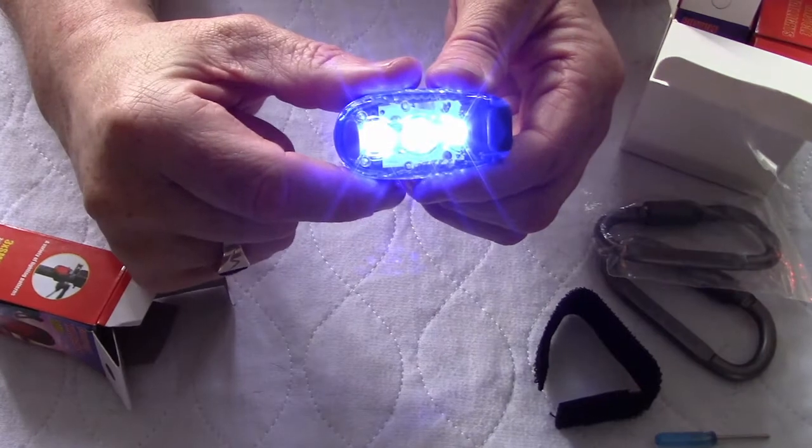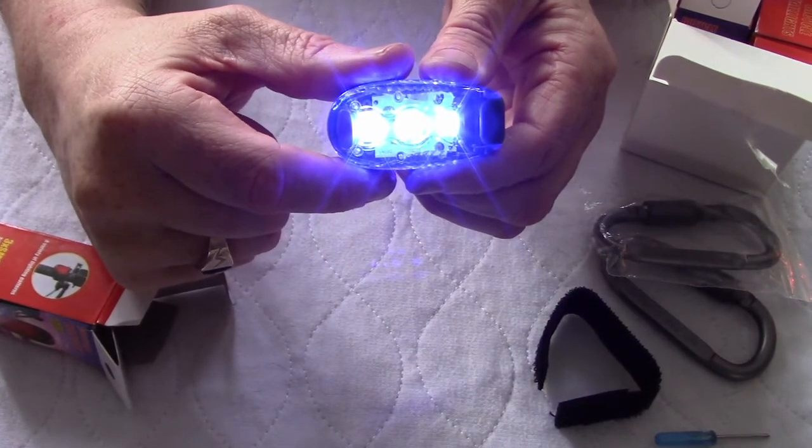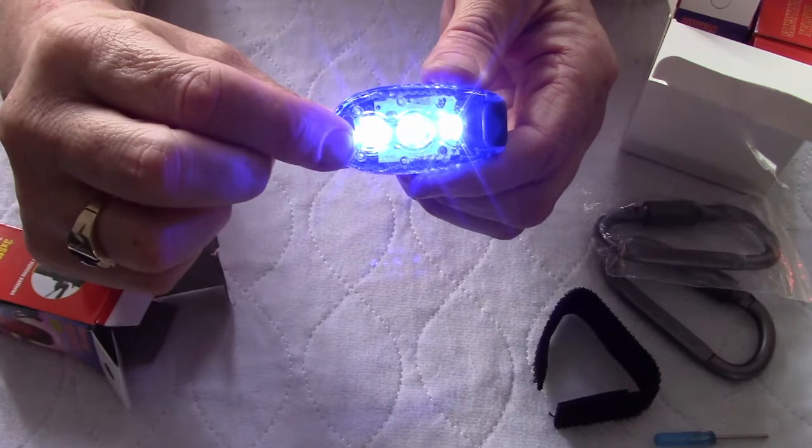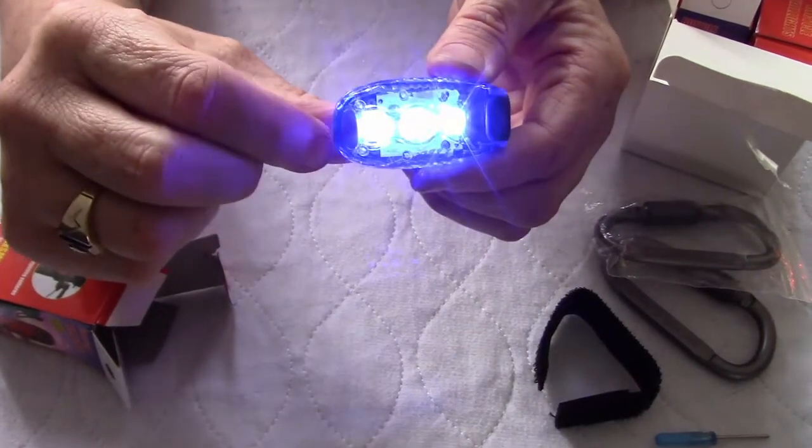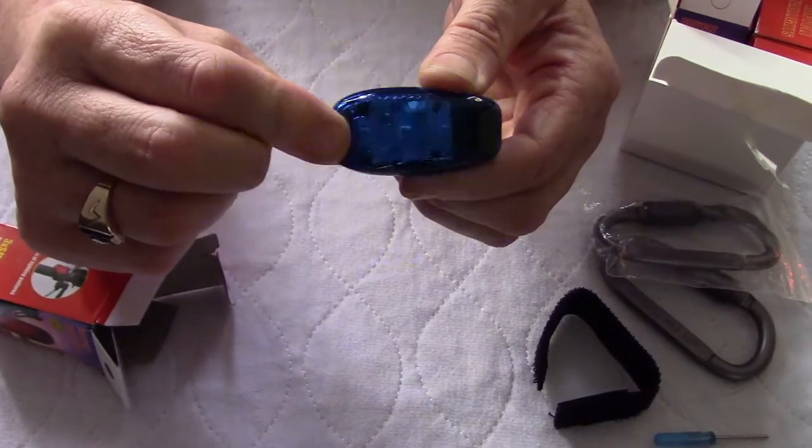So here's the stable light source and I'm told that this can be seen from hundreds of feet away. You also have two different strobe patterns. This is number one and this is number two.